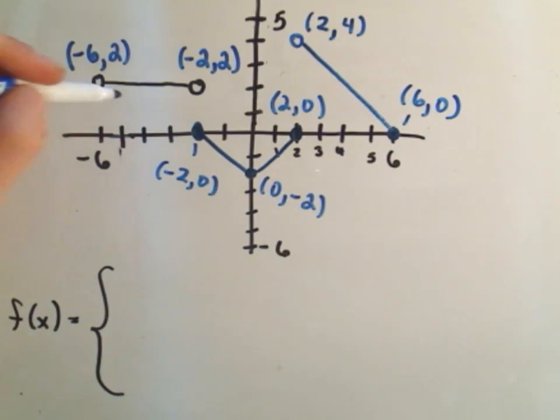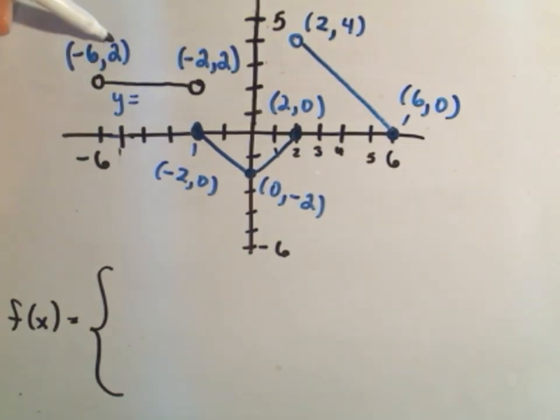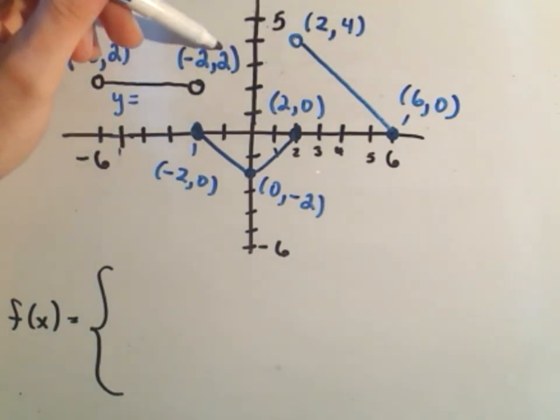Remember, a horizontal line has the equation y equals something. And it's y equals basically whatever the y coordinates are. So notice, it starts at a height of two and it extends over to a height of two. So this is simply the line y equals two.